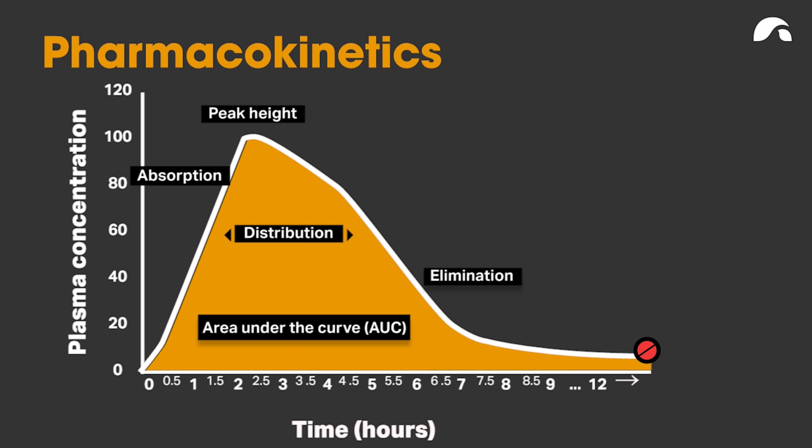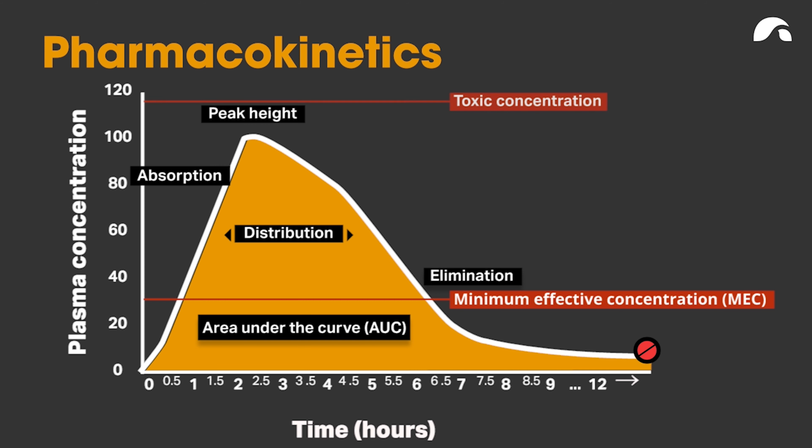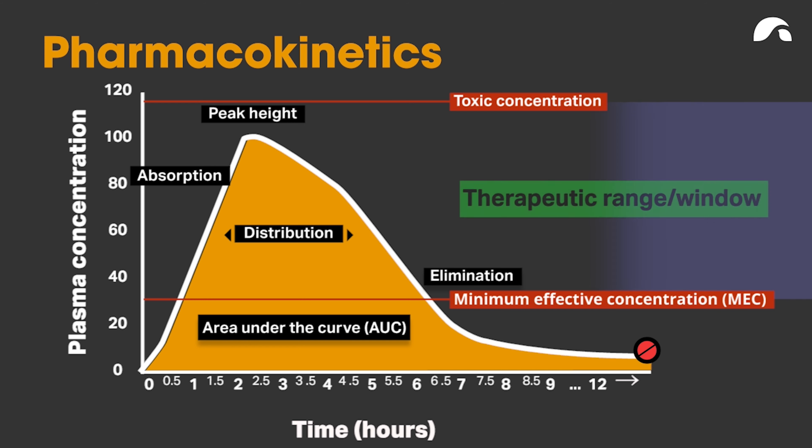For virtually every medication or drug that we take, there is a minimum effective concentration. That is the line between levels of 20 and 40 — around 30 there — that is the point where you start to get an effect of the medication. Then when you get to the top, there's another line, and that is when you get to toxic concentration. What we have to do is allow the dose to fit within that range, and that is known as the therapeutic range — or for those using American texts, the therapeutic window, which is exactly the same thing.